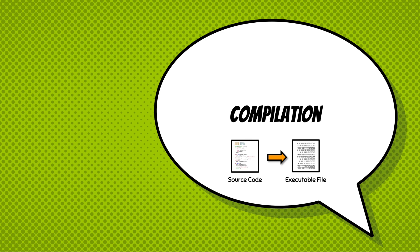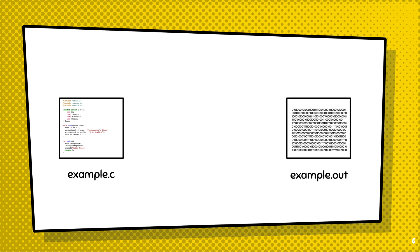In this video, you will learn the compilation process of C programs. Suppose that we have a C program called example.c and we want to compile it to example.out.